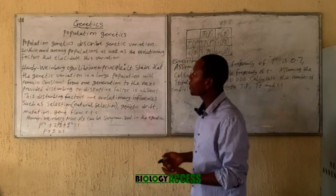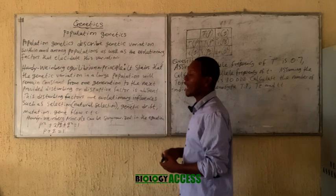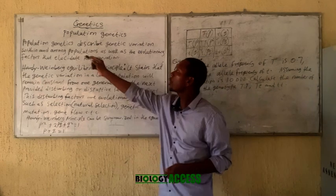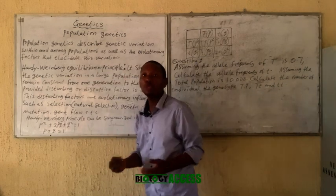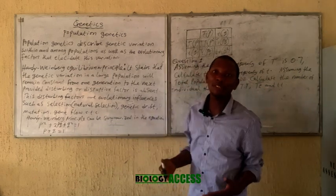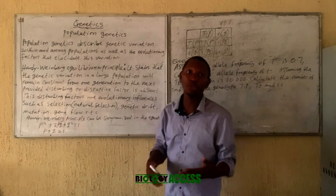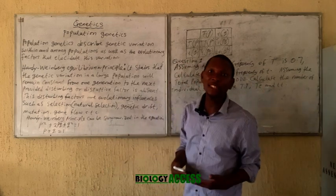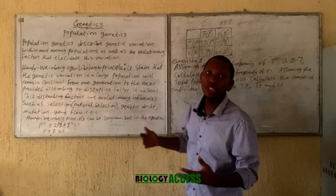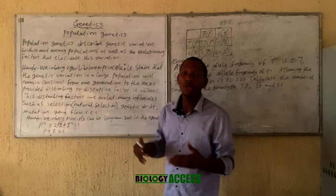Population genetics describes the genetic differences that occur within or among different world populations, as well as the factors that affect this. It consists of two terms: population and genetics. Population in biology describes individuals of the same species that can interbreed in a particular environment or habitat, while genetics is the study of heredity and variation. So population genetics is concerned with the genetic variations that occur within or among populations.